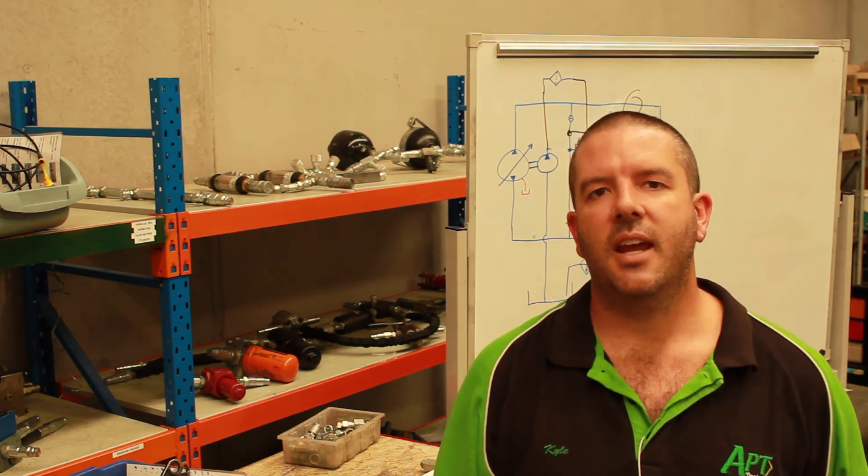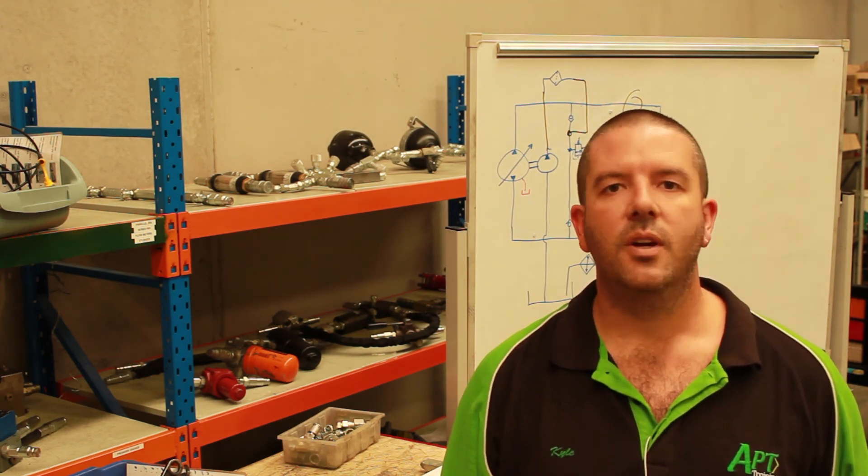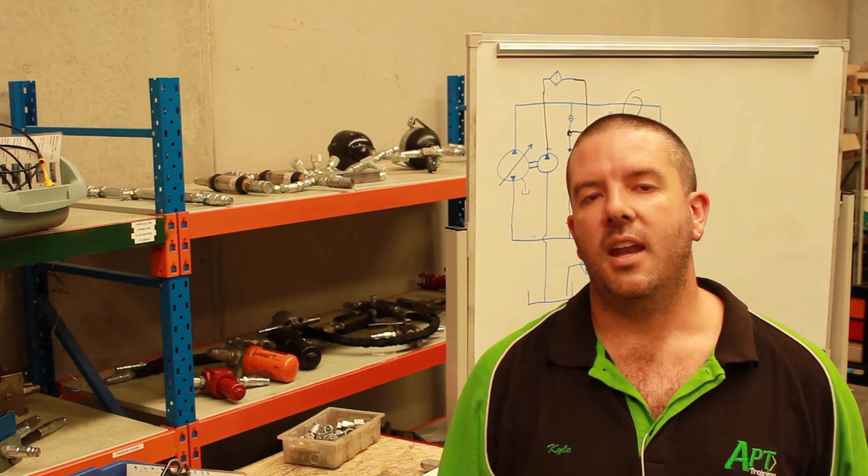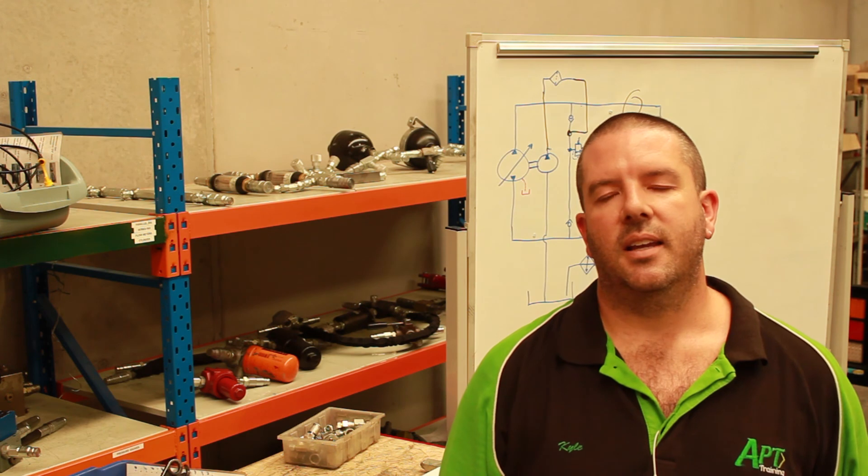So there it is - there's our closed loop transmission and how we get oil in and out of the circuit for cooling and filtration. Basically we have a charge pump. The charge pump has a job of pushing oil into the circuit, and normally we have a hot oil shuttle or a purge relief which allows us to take oil out and allows us to use that oil to cool it and filter it.